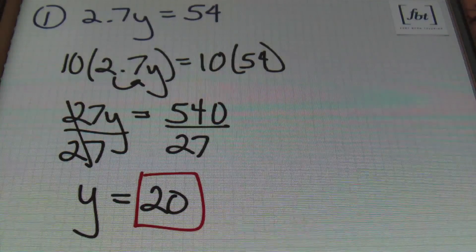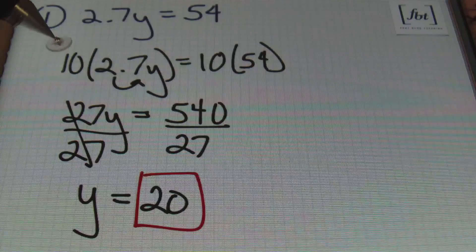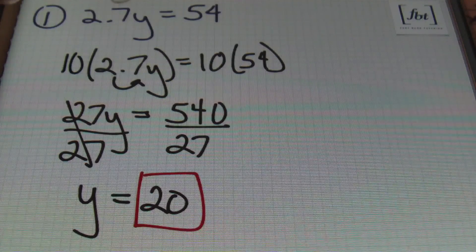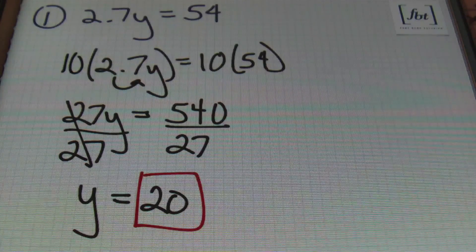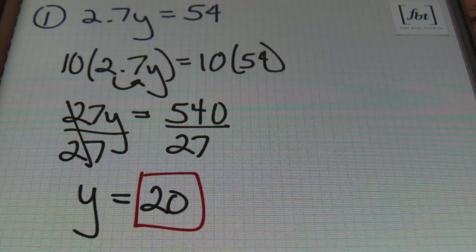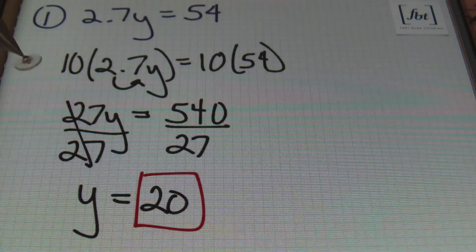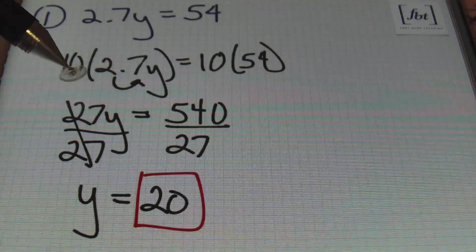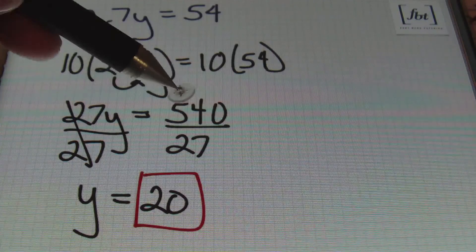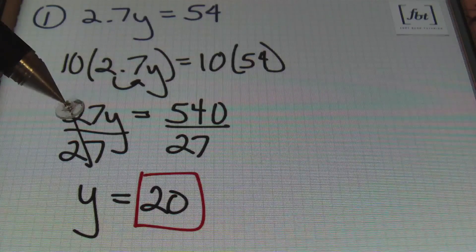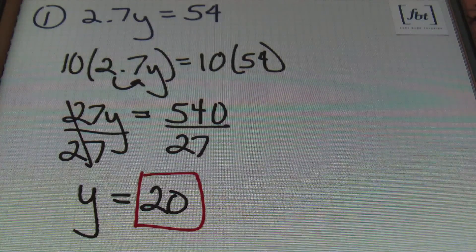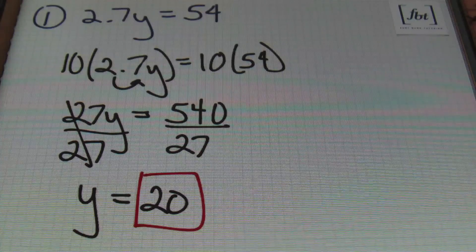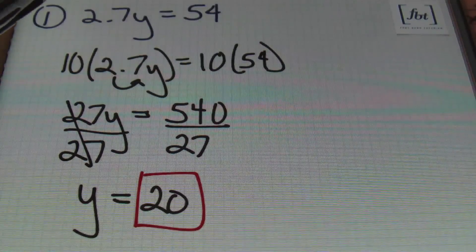We started out at number 1 with 2 and 7 tenths y equals 54. I multiplied both sides by 10 because that's my smallest place value — one place to the right of the decimal is the tenths place, T-E-N-T-H-S. That gave me an equivalent equation of 27y equals 540. Then dividing both sides by 27, y equals 20. That made it a lot easier — I prefer equations without decimals.